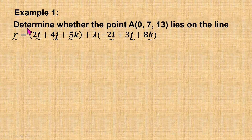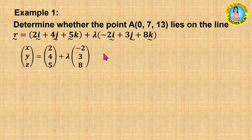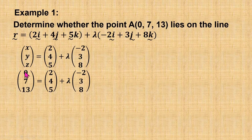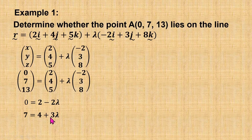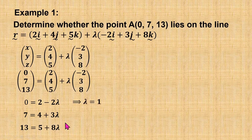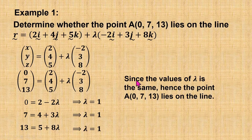Let's look at this example: determine whether the point A lies on the line given. First, we convert the equation of the line into the column vector form. Then we substitute the point into this equation. From the first row, 0 = 2 − 2λ. From the second row, 7 = 4 + 3λ. From the third row, 13 = 5 + 8λ. From each equation, we find that lambda is equal to 1. Since the values of lambda are the same, we conclude that point A lies on the line.